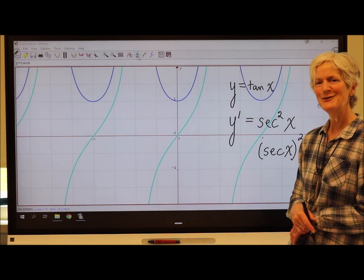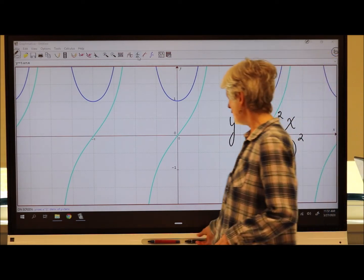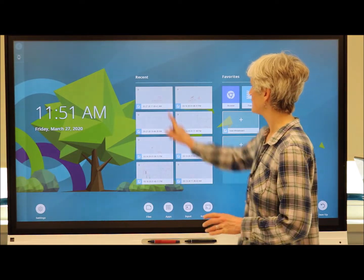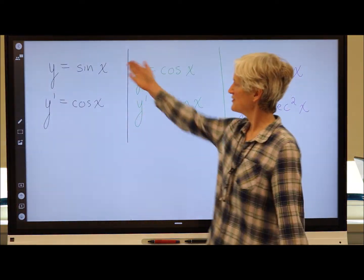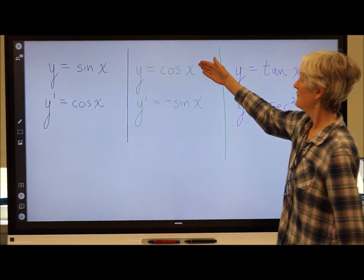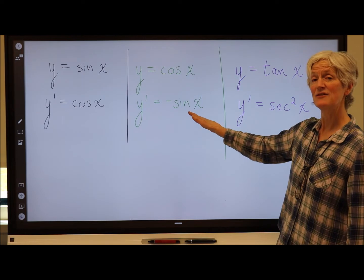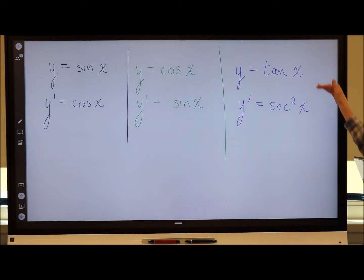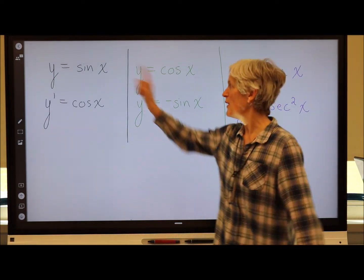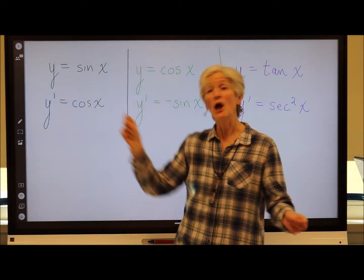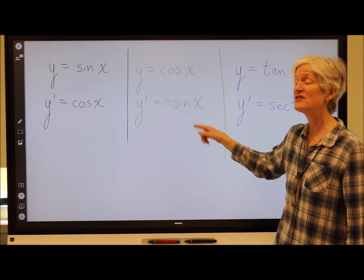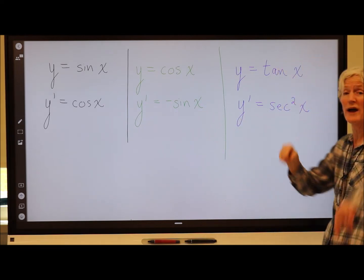This is so cool. So here we have some new kind of shortcut rules. In order to find the derivative of sine of x, we know it's the cosine of x. The derivative of cosine of x is negative sine of x. And the derivative of tan of x is secant squared.